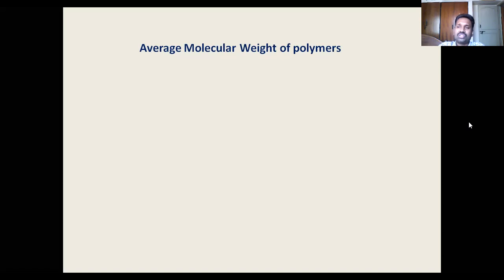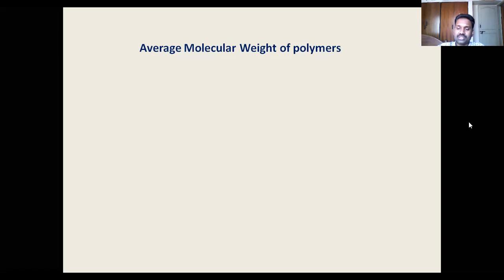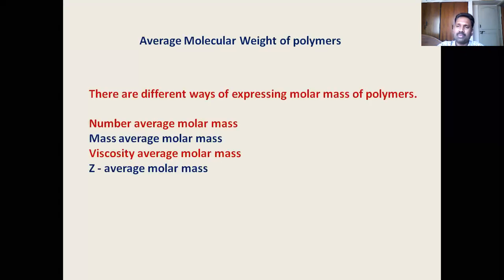Therefore we must approach molecular weight determination differently, and we coin new terms like the average molecular weight of polymers. In today's class we are going to discuss the theoretical approaches for average molecular weight of polymers — the practical determination we will discuss later. There are different ways of expressing molecular weight: number average molecular mass, mass average molecular mass, viscosity average, and z-average molecular mass. We will see each one individually.